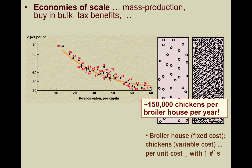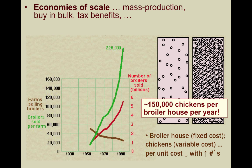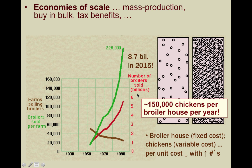Now look at this graph. While dated, you can still see the number of farms has decreased over the years while the broilers sold per farm and the total number of broilers sold has grown precipitously. According to the USDA, around 8.7 billion chickens were sold in the U.S. alone in 2015.